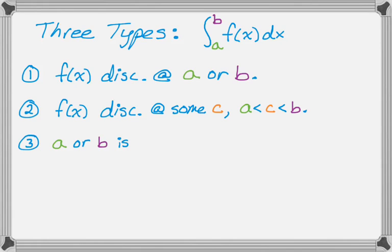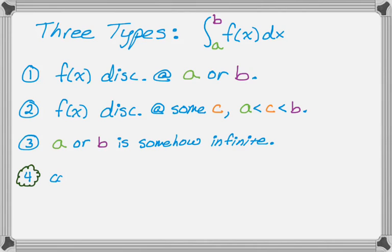The third case is that a or b, or both, could be infinite — so either a is negative infinity, b is positive infinity, or you're going from negative infinity to positive infinity. The fourth case is a combination of all of these, which is awful, and you definitely don't want that to happen.